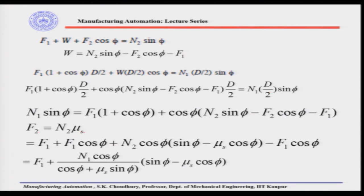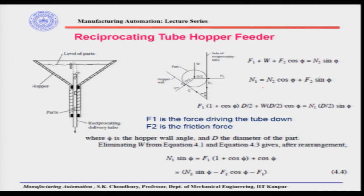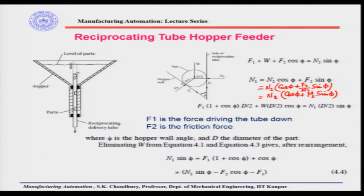Since F2 is equal to N2 times μs, substituting and rearranging, N2 can be written as N2 times (cosφ + F2/N2 times sinφ). Taking N2 as common, F2/N2 is nothing but μs — the coefficient of friction between the hopper wall and the part. Therefore this gives cosφ + μs·sinφ, and thus N2 = N1 / (cosφ + μs·sinφ).